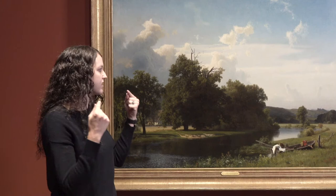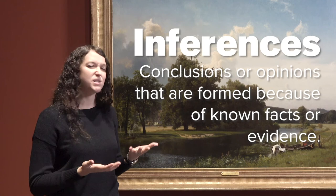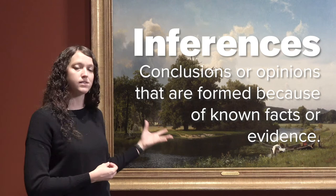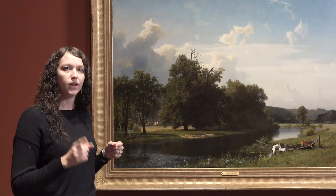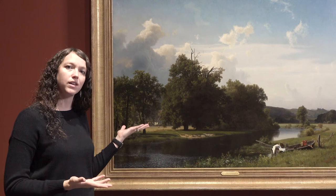Another thing that scientists do is they make inferences. An inference is basically just a guess, but it's a guess that's based on evidence — in this case, it's going to be based on something we can see. So we're going to make an inference about what season we think it might be. What season do you think it is in this painting? And remember, because we're making an inference, we have to back it up with evidence. Tell me what season you think it is and why — what do you see that makes you say that?